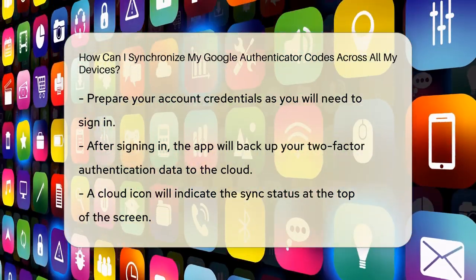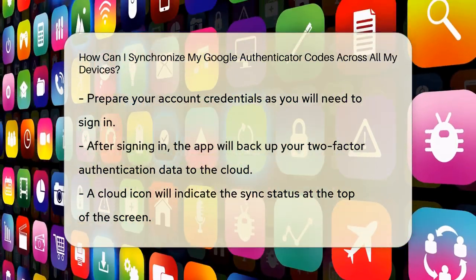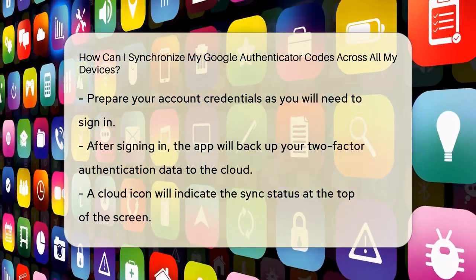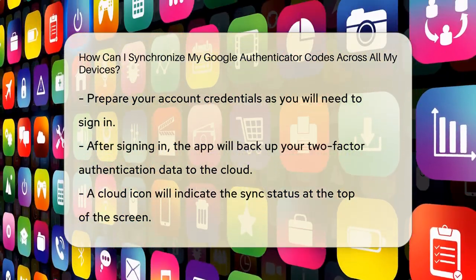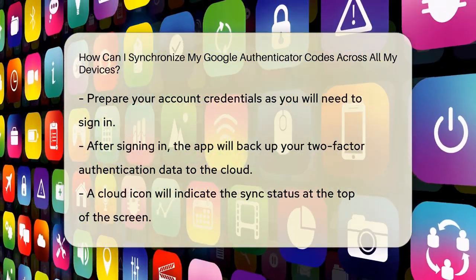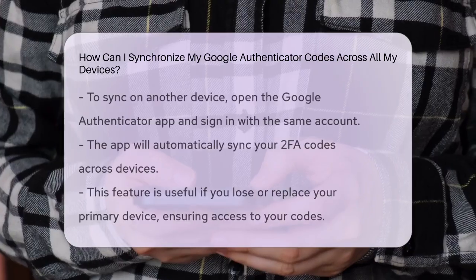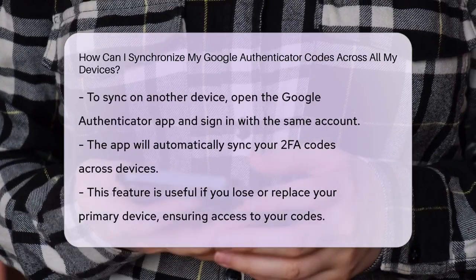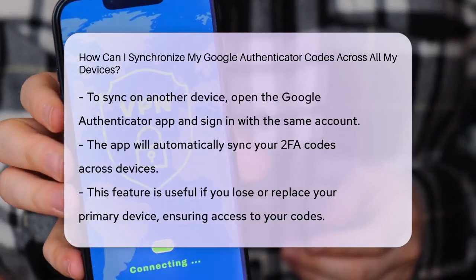To sync your accounts on another device, open the Google Authenticator app on that device and sign in with the same account. The app will automatically sync the 2FA codes, making them accessible from any device linked to your account.